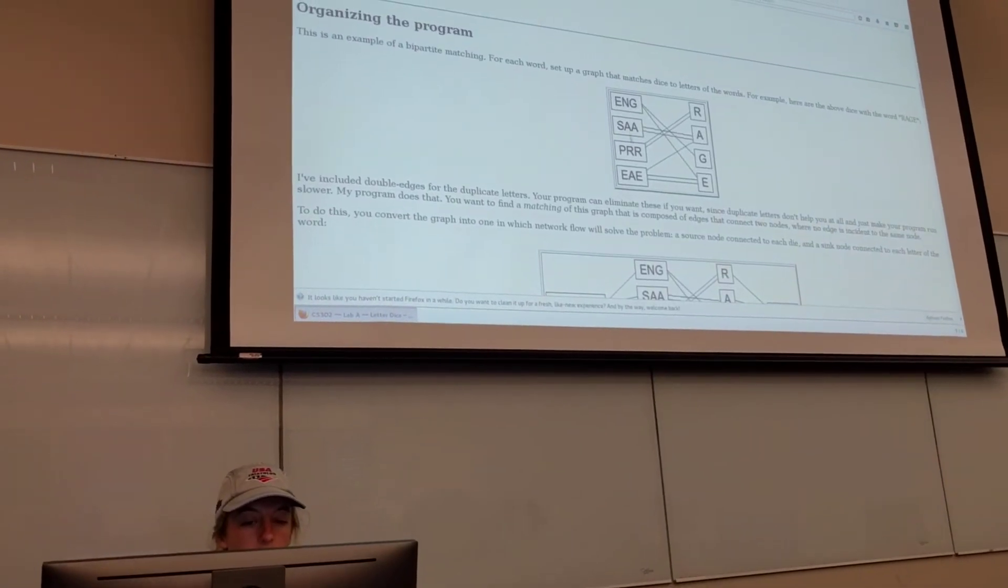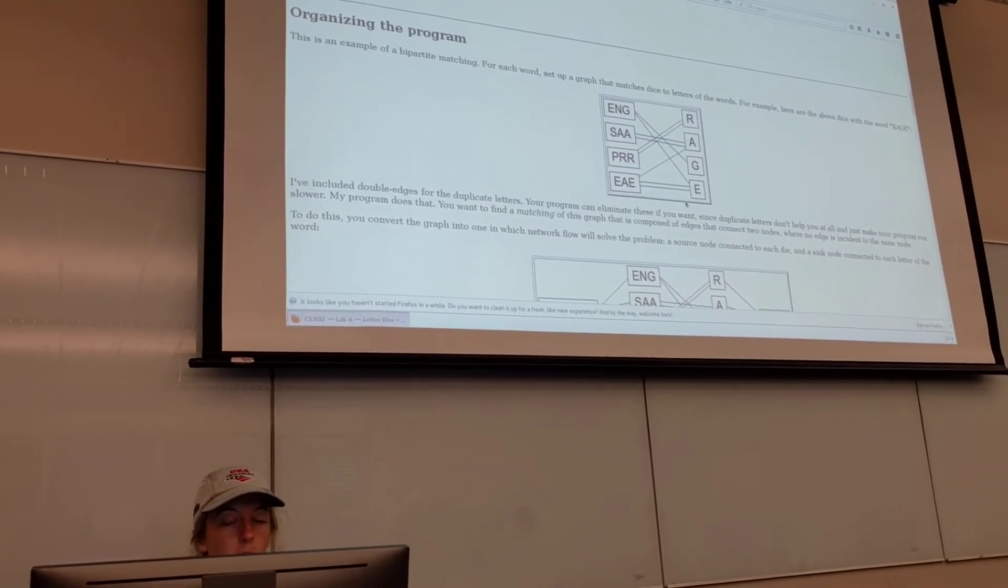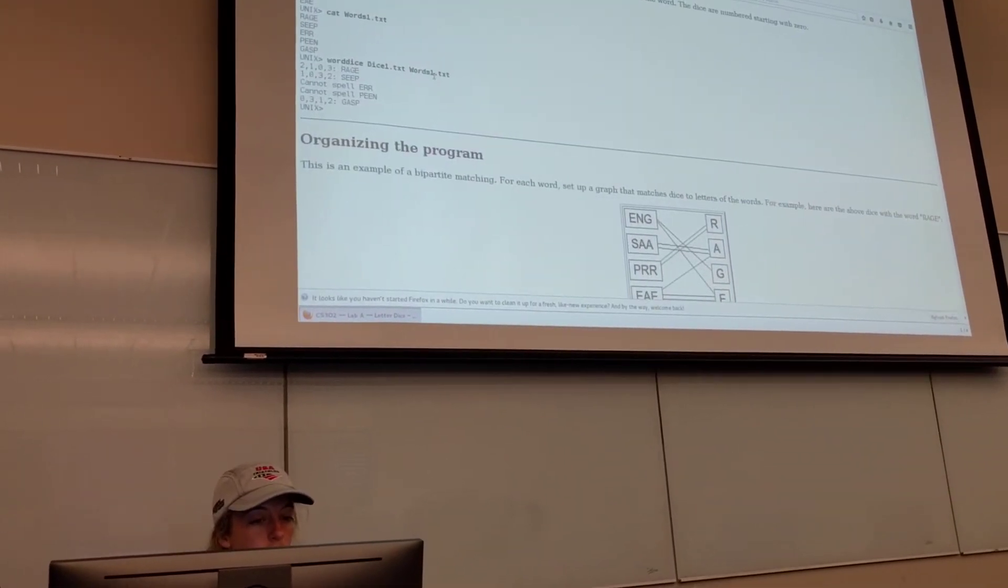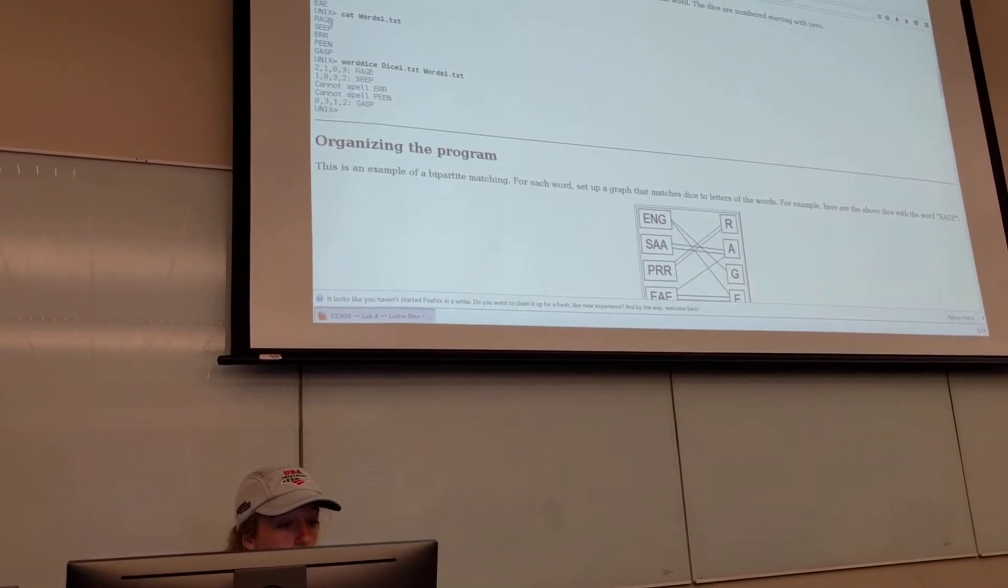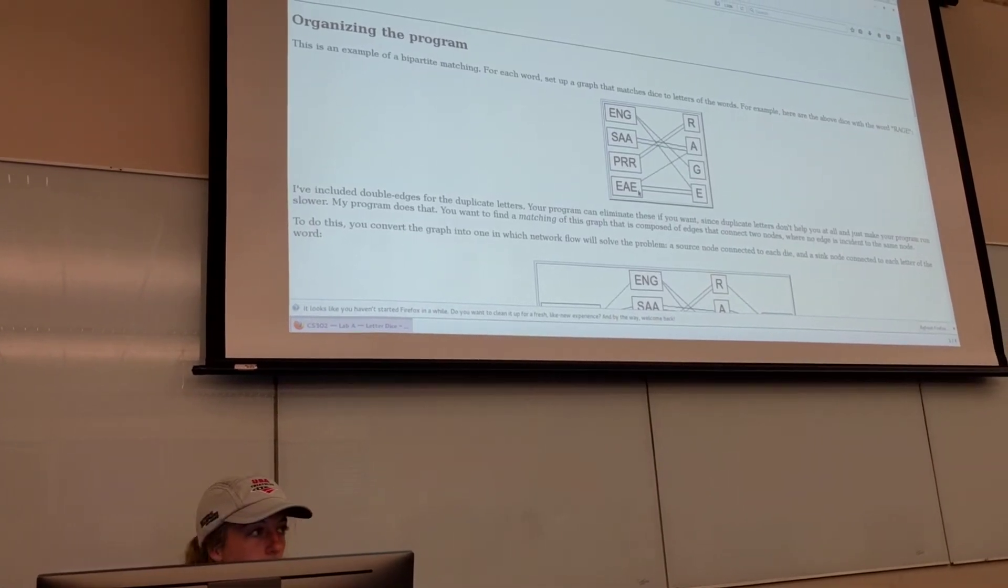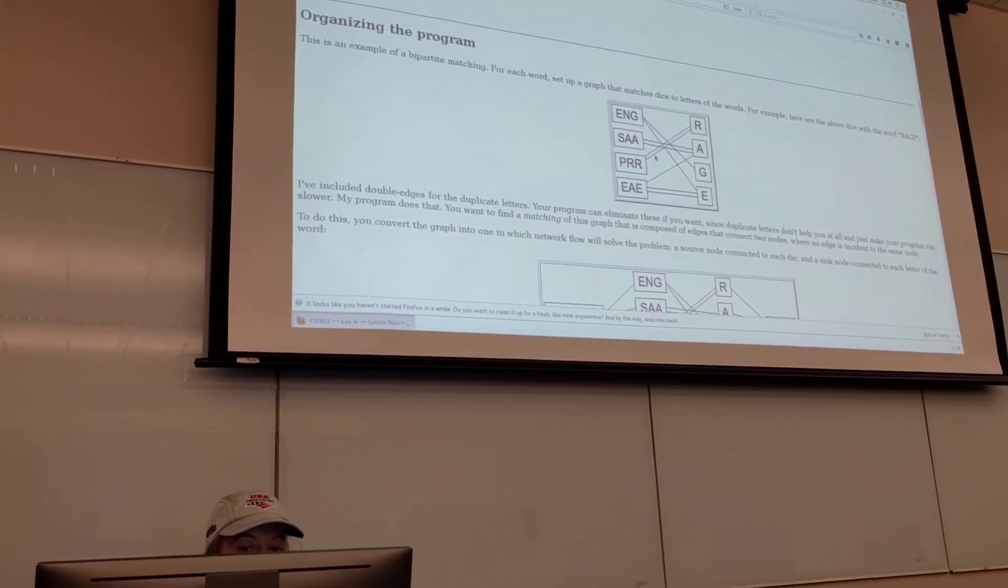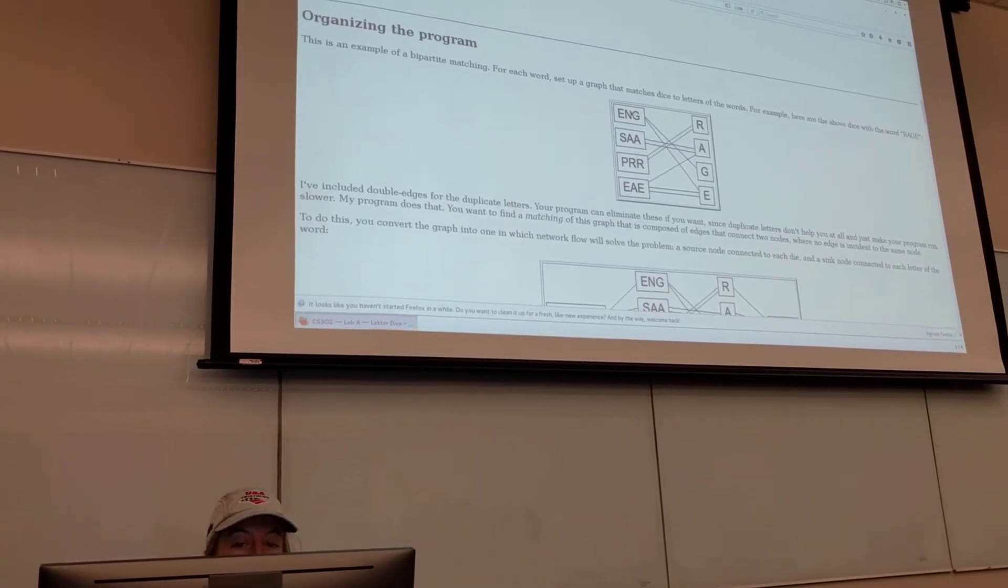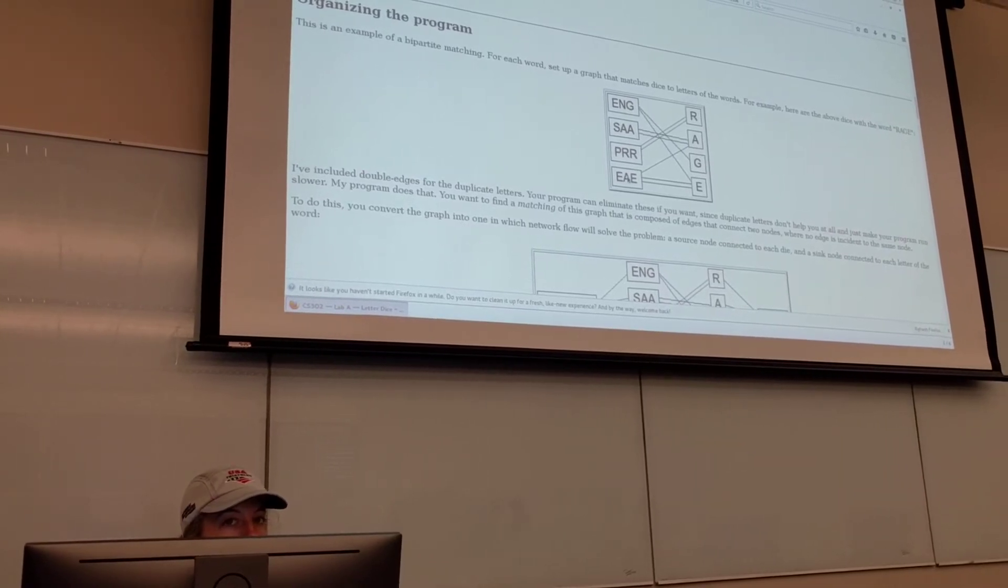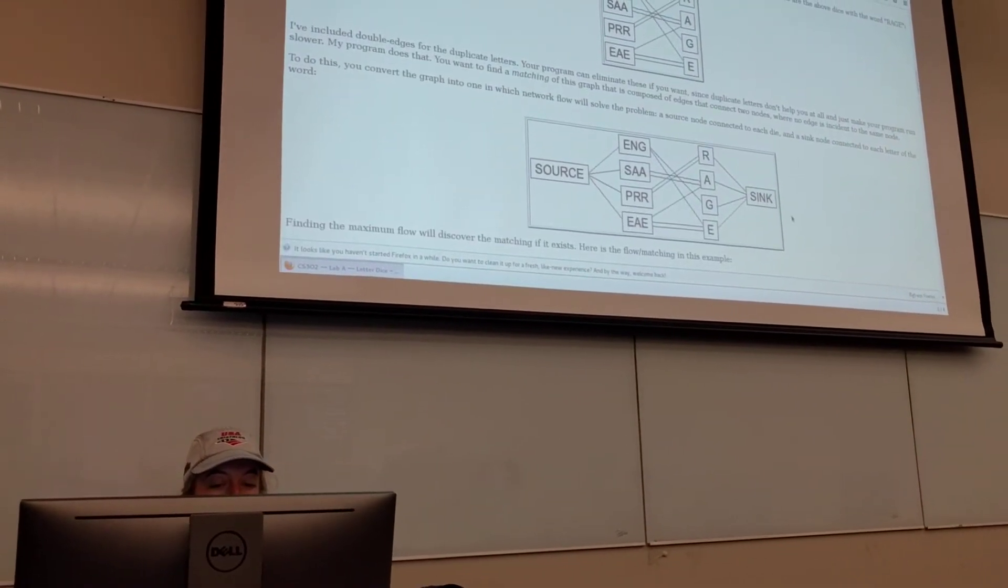If we take our dice file and take our word file, we're going to look at one word at a time and consider that one word as a network flow graph. With the words one dot text file, the first one is rage. This example sets up four dice, the three-sided dice that we just looked at, and R-A-G-E. Like Dr. Plank says, it's an example of bipartite matching. This is one group, this is the second group. The nodes within the group do not have any connections to each other. There's two groups, so that's what makes it bipartite.